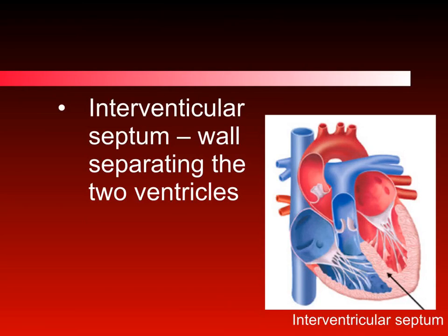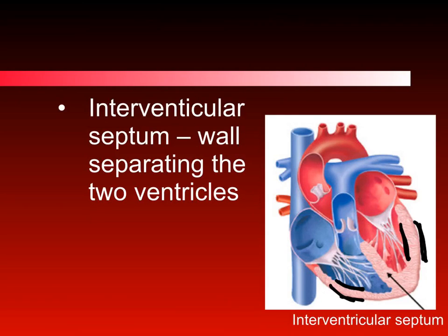One way to tell between the left and right sides of the heart, especially the ventricles, is the outer thickness of the wall. The myocardium, which is the muscular layer of the heart, is much thinner on the right ventricle compared to the left ventricle. So the side with the thicker myocardial layer is the left ventricle and the one with the thinner one is the right ventricle.